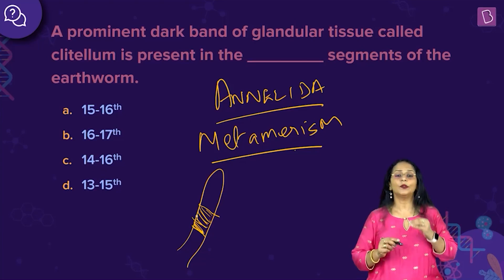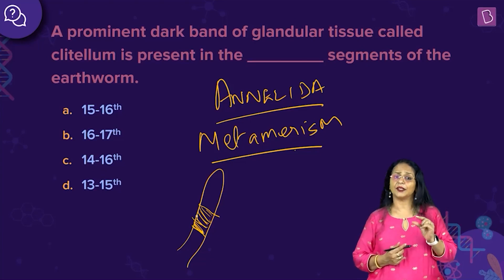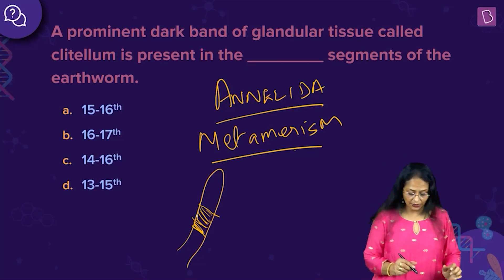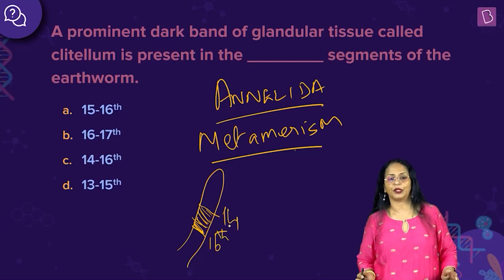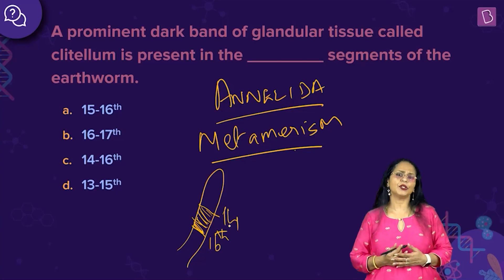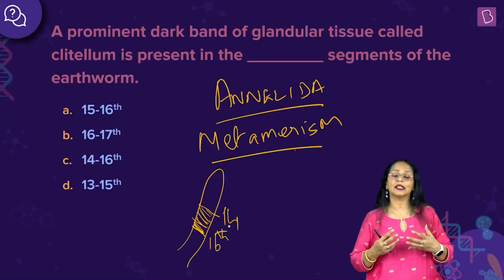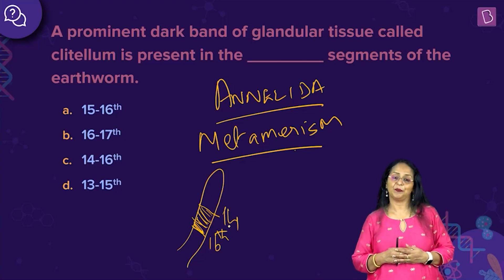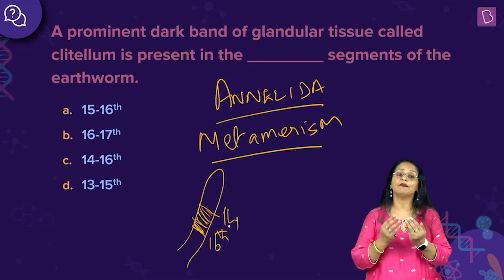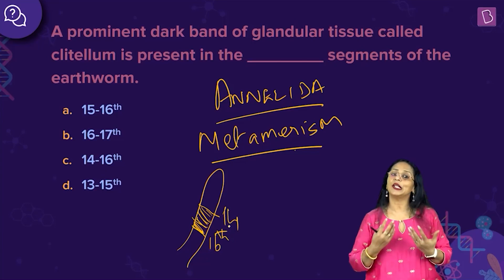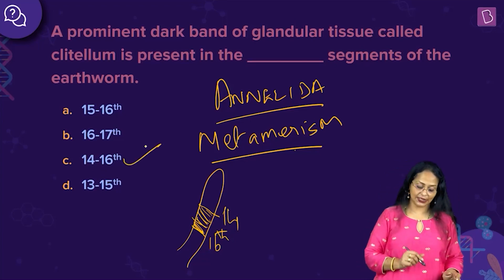The body of the earthworm is divided into almost 100 to 150 segments. The clitellum is present between the 14th and the 16th segment of the animal's body. What is the importance of this clitellum? It is a glandular tissue, meaning it secretes something. It secretes a substance that is very important during the breeding season. This mucus hardens to form the cocoon.